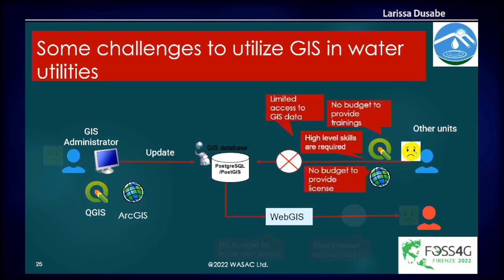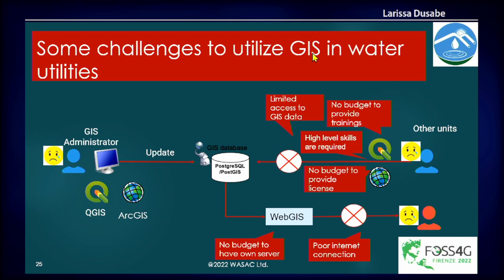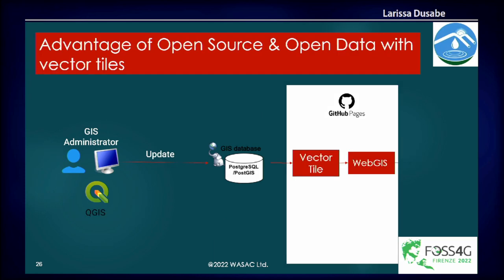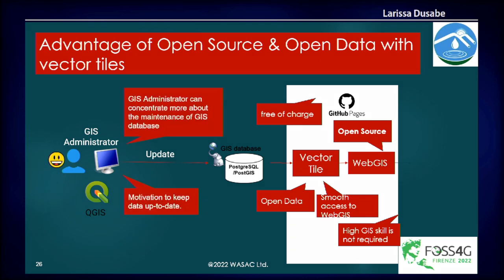The challenge we encountered in wanting to utilize GIS was cost: we needed a license, our own server, and we had poor internet. But the advantages of using open source and open data are that it's free of charge, it doesn't require high skills — you can teach yourself — and it keeps the motivation to update since the budget available goes to the updating process. The GIS administrator can concentrate more on maintaining the GIS database.